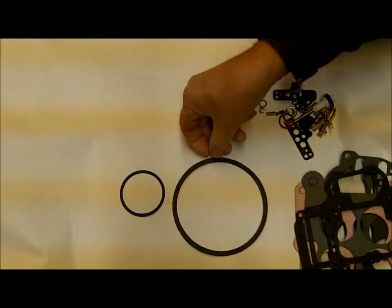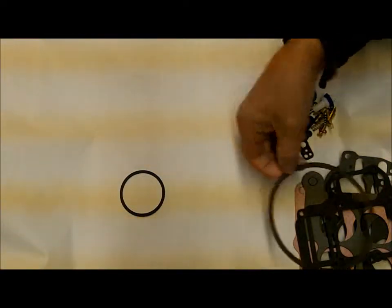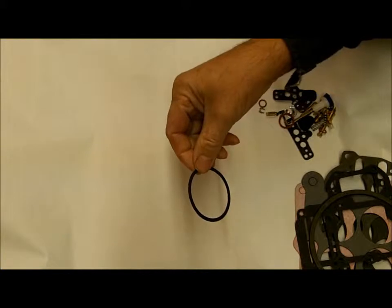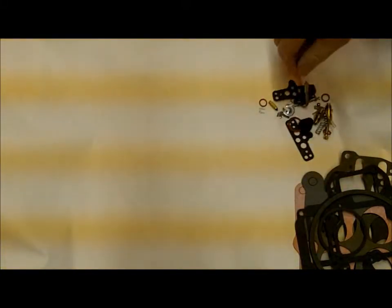You don't get these in very many kits anymore, and that's the air cleaner to carburetor gasket and a new choke thermostat gasket if you happen to have an automatic choke on yours, you probably do.